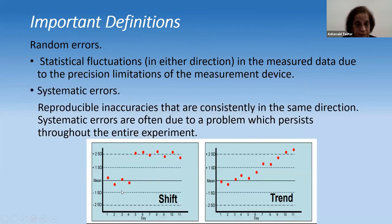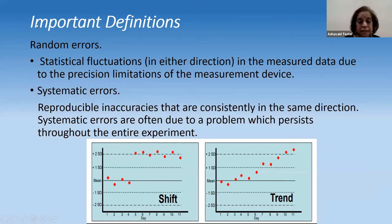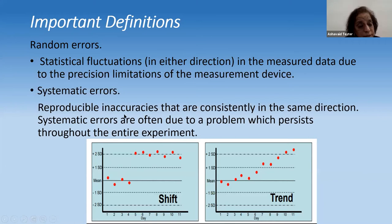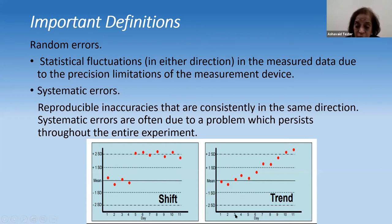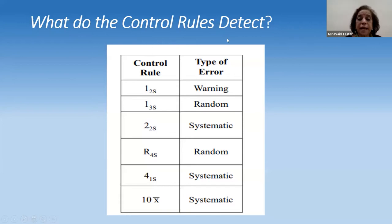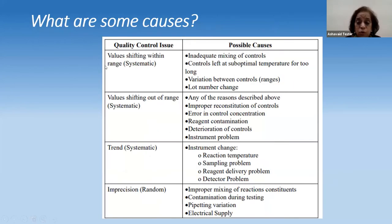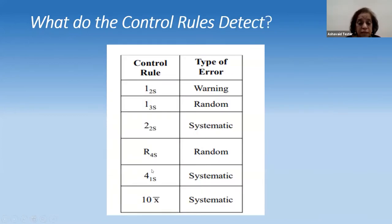Corrective action addresses errors which could be random or systematic. Random errors are statistical fluctuations — they could be in either direction — due to precision limitations of the measurement device. Systematic errors, on the other hand, are inaccuracies that are reproducible all the time; you get trends consistently in the same direction, often due to a problem present throughout the entire experiment. The control rules detect which type of error has occurred.